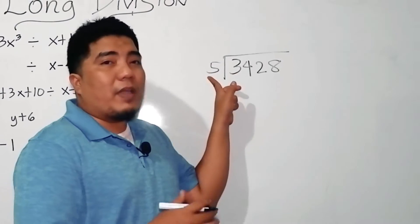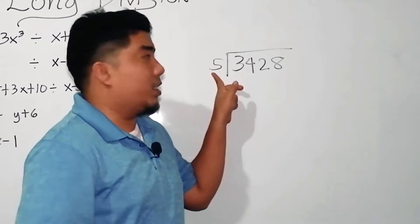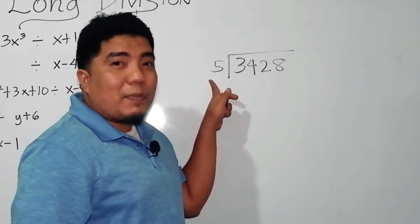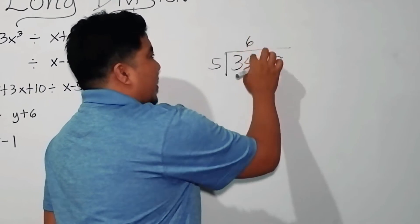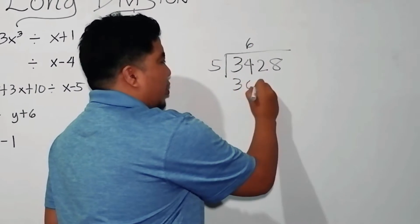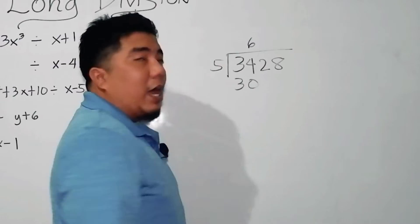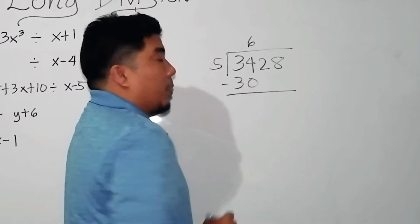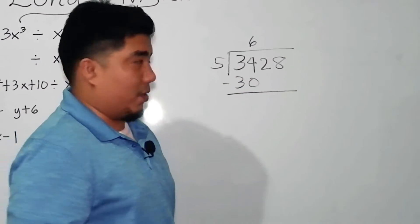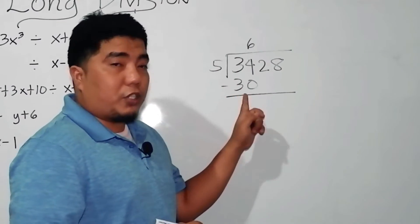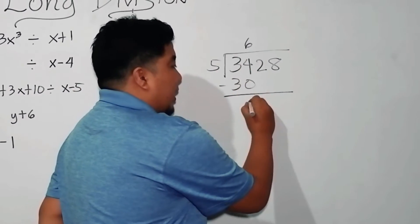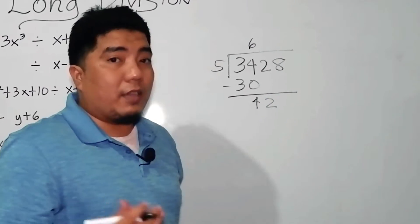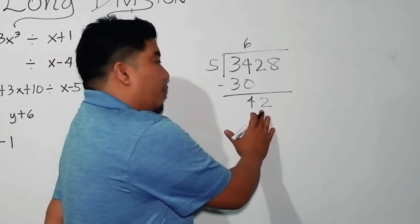So, 3 divided by 5 — is that possible? No, it's not. So we use 34. 34 divided by 5, that is 6. 6 times 5, that is 30. When you arrive at this part of your solution, what you do next is subtract. 34 minus 30, that is 4. Then you bring down the next digit, giving you 42.